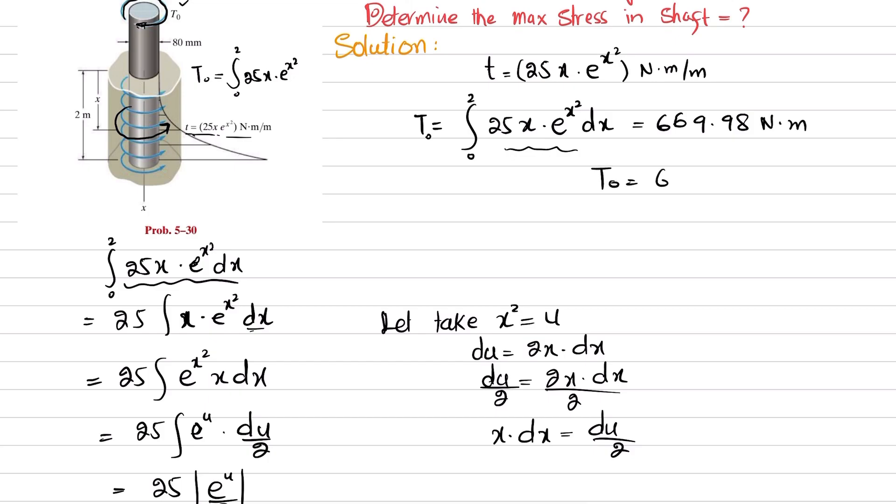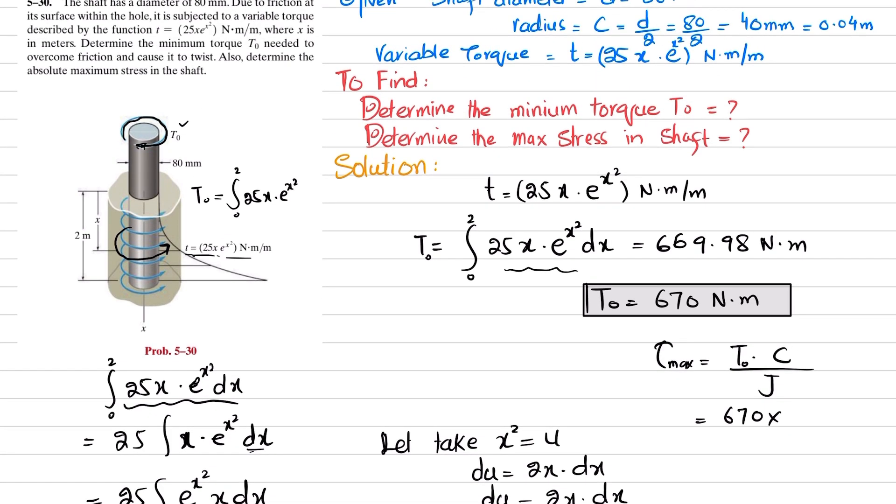Now we will find the shear stress. We know that maximum absolute shear stress is equal to Tc/J. T₀ is 670, c is 0.04 divided by J = π/2 × c⁴ = π/2 × (0.04)⁴.